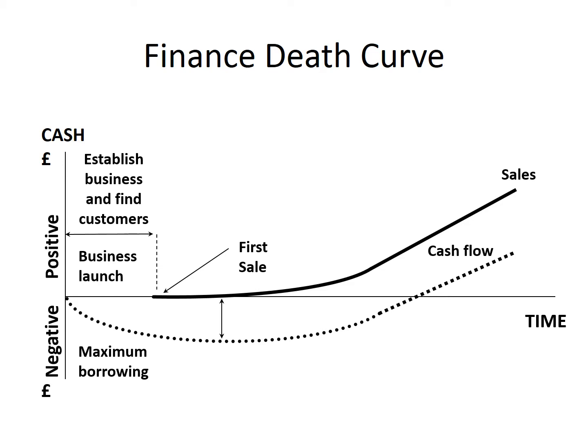Lenders are banking on it just as much as you are - that's why many will require some kind of guarantees. The crux of it is: at what point are you going to start to make money? Where's your pain threshold? How much are you going to lose before you start to make money back? That's one of the key things about the financial death curve.